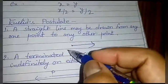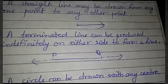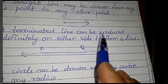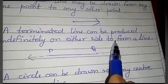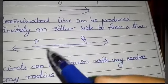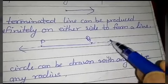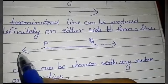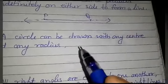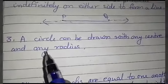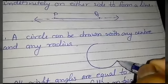Second postulate: a terminated line can be produced infinitely on either side to form a line. For example, line segment PQ can be extended in both directions. Third postulate: a circle can be drawn with any center and any radius.